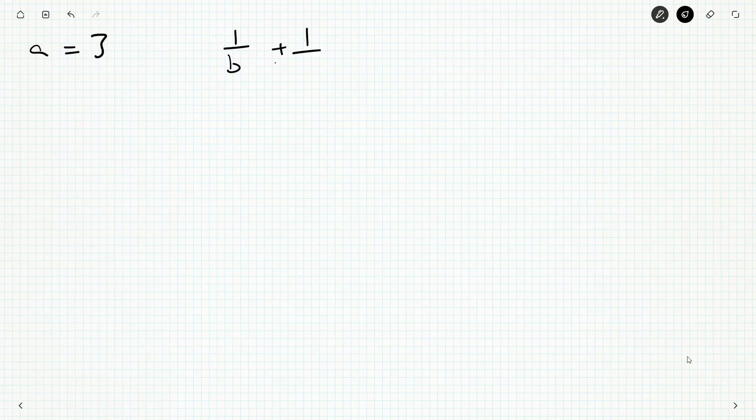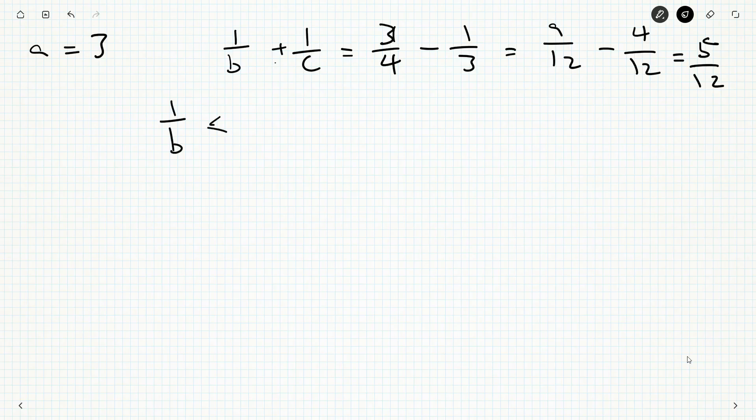What happens if A is 3? Well, then 1 over B plus 1 over C is going to be 3 quarters minus 1 third. And so that'll be 9 twelfths minus 4 twelfths. So that'll be 5 twelfths. 1 over B plus 1 over C has to be equal to 5 twelfths.